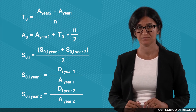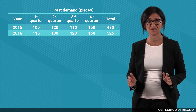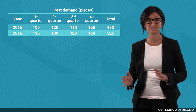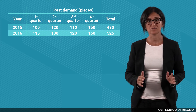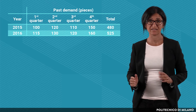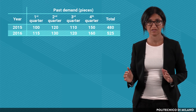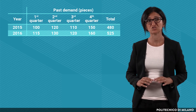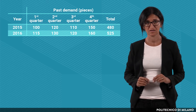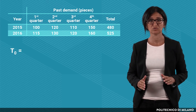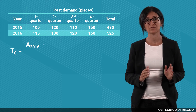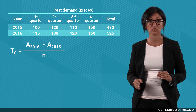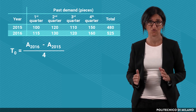Let's see an example. Let's consider the following time series of the past demand, and let's assume that we are at the end of December 2016. We assume seasonality on a yearly basis. We want to forecast the future demand by applying the Holt-Winters method. First of all, we have to initialize the model. Let's start with the trend. T0 is equal to the average in 2016 minus the average in 2015, all divided by n, where n is equal to 4 since we have 4 quarters per year.